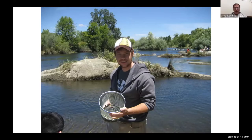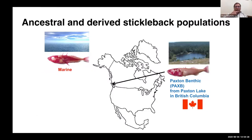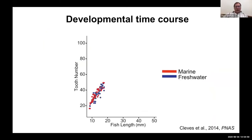This project was started by Phil Cleves, one of the first two grad students to join my lab. Phil's very first experiment was to compare tooth number in embryos, larvae, and adults and ask when this dramatic increase in tooth number arises during development. We started lab colonies of marine and freshwater fish — the freshwater population is from a well-described lake in Canada, the Paxton Benthic population, which is the high-tooth freshwater population. Phil collected lab-reared marine and freshwater fish over a developmental time course, fixed each fish, stained it, and counted teeth.